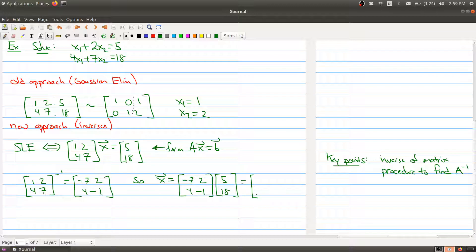And when I do that, I get minus 35 plus 36, which is 1. And then I get 20 minus 18, which is 2. But notice I'm getting the exact same answer. Over here, I got x1 is 1 and x2 is 2. And that's exactly what I'm getting here.